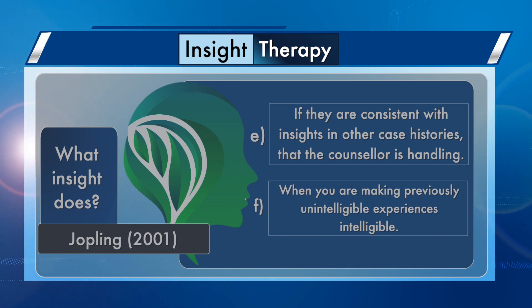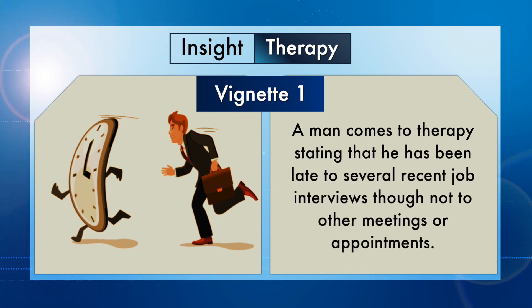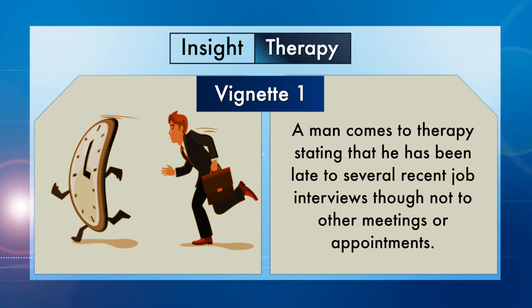Now let us see three counseling vignettes of different individuals with a similar problem — unpunctuality. These vignettes were designed to illustrate the therapeutic process, and a similar problem was chosen for each to highlight the unique meaning and motivation a single issue may hold for each person. In vignette 1, a man comes to therapy stating that he has been late to several recent job interviews, though not to other meetings or appointments. He is attempting to advance his career, and being late to interviews is sabotaging his success.